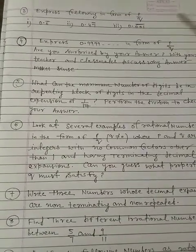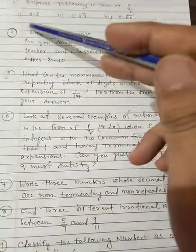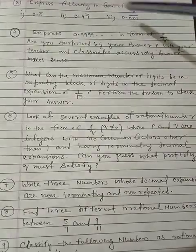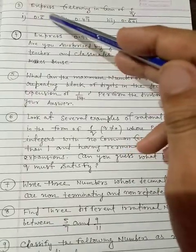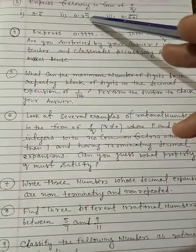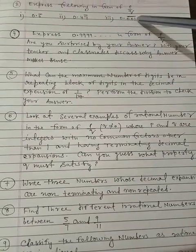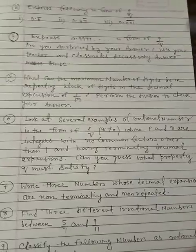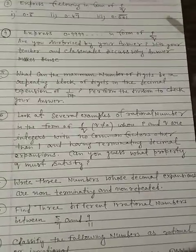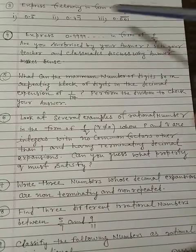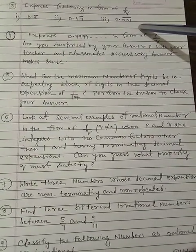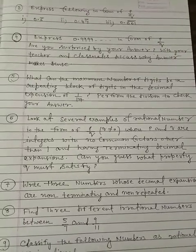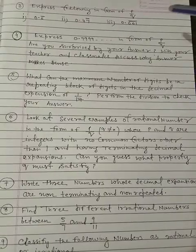Let's move on to question number 3. Express the following in the form of p upon q: 0.6 bar, 0.47 bar, 0.001 bar. In the first part, repeated block is 6, here repeated block is 7, and here repeated block is 001. In the last video, I discussed all examples where we have to convert these types of rational numbers in p upon q form. So please try it, you can do it yourself.